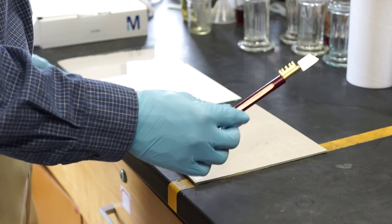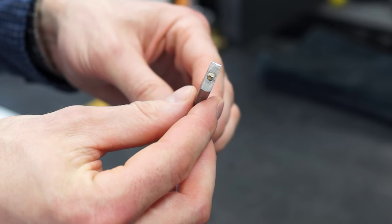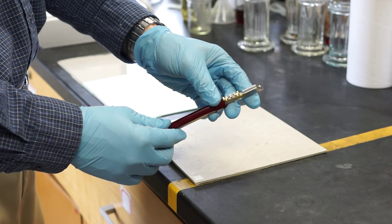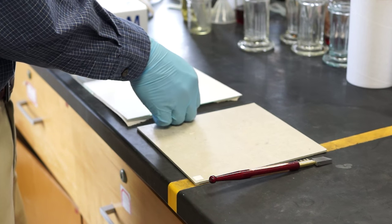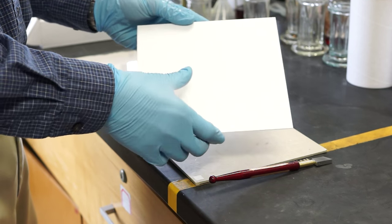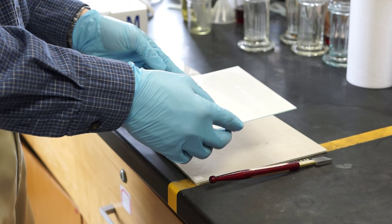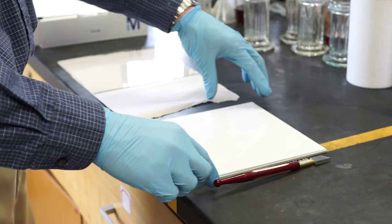To cut our TLC plates, we'll be using a diamond glass cutter with a diamond tip on the end to score our glass. To start, take a fresh clean TLC plate and place the silica side face down on a clean piece of cardboard. The glass side should be facing up towards you.